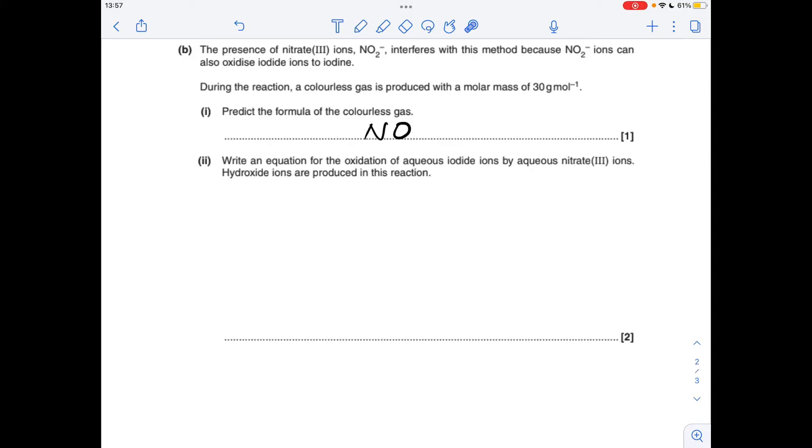And then for the last part, we've got to write this equation for the oxidation of aqueous iodide ions by the aqueous nitrate(III) ions. Got some information there that hydroxide ions are also produced in this reaction. So the way I'm going to do it, I'm going to split it into the two half equations, and then combine them to come up with the overall redox reaction. So we'll deal with the iodine one first. Iodide ions are oxidized to iodine, so we'll turn that into a half equation, we'll need a 2 there to balance the atoms. We've got 2 minus charge on the left, no charge on the right, so we need to put 2 electrons on the right. So that's the oxidation reaction.